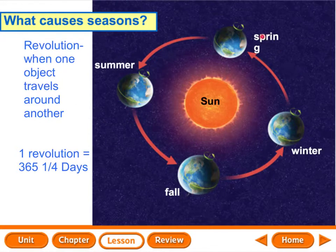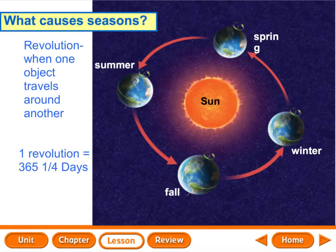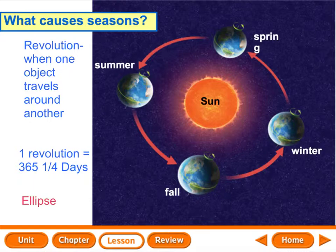It's still going around, so it's still revolving. Think of the orbit like train tracks telling it where to go. The shape of Earth's orbit is called an ellipse. An ellipse is a flattened circle, kind of like an oval.